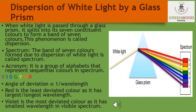We have seen that the blue light bends the most and the red light bends the least. This is because the angle of deviation is inversely proportional to its wavelength. That is why red is the least deviated color, as it has the largest — that is, the longest — wavelength. More the angle of deviation, the less will be its wavelength. Violet is the most deviated color as it has the smallest wavelength and is visible in the spectrum.